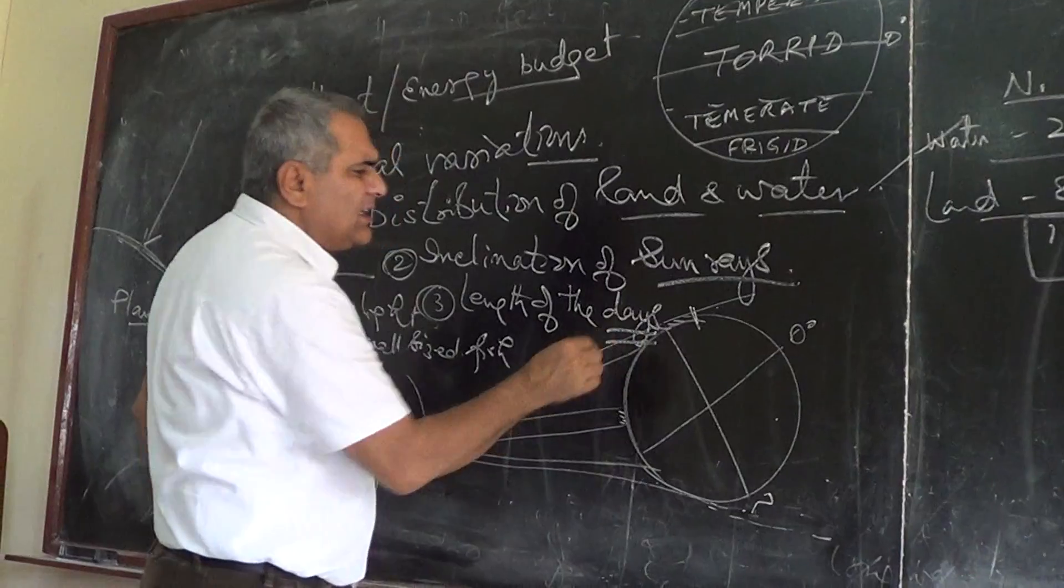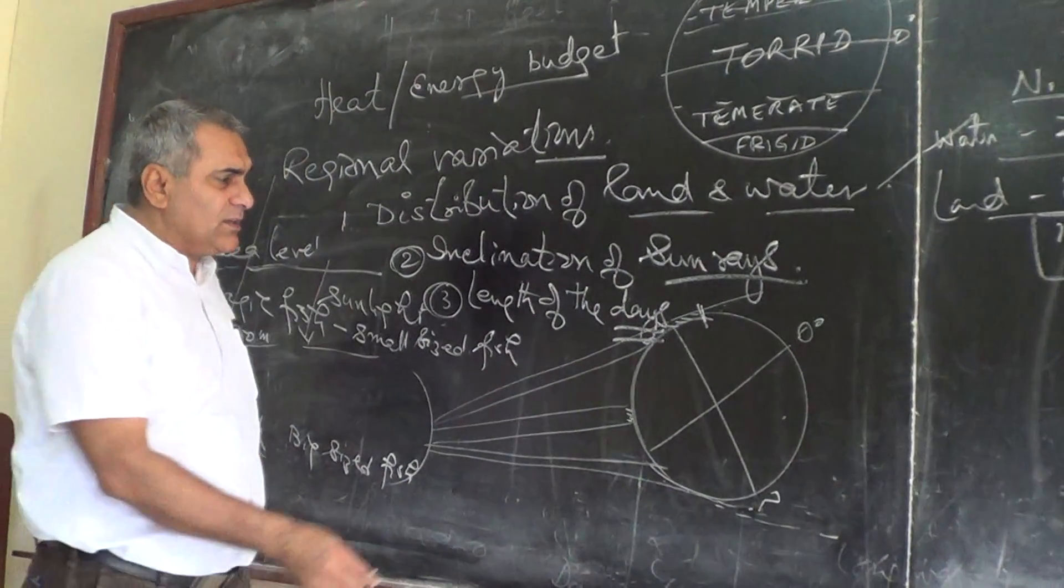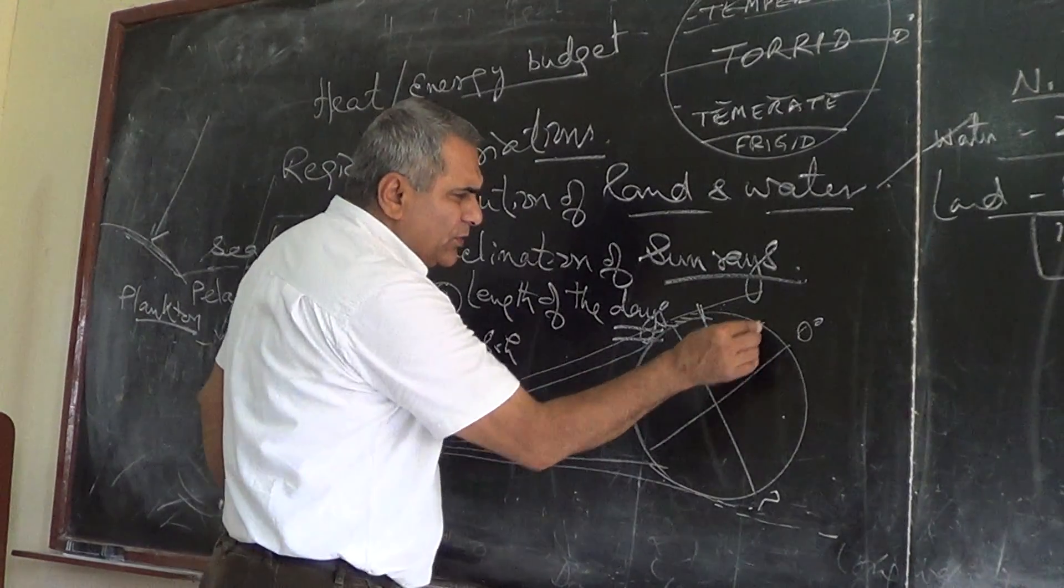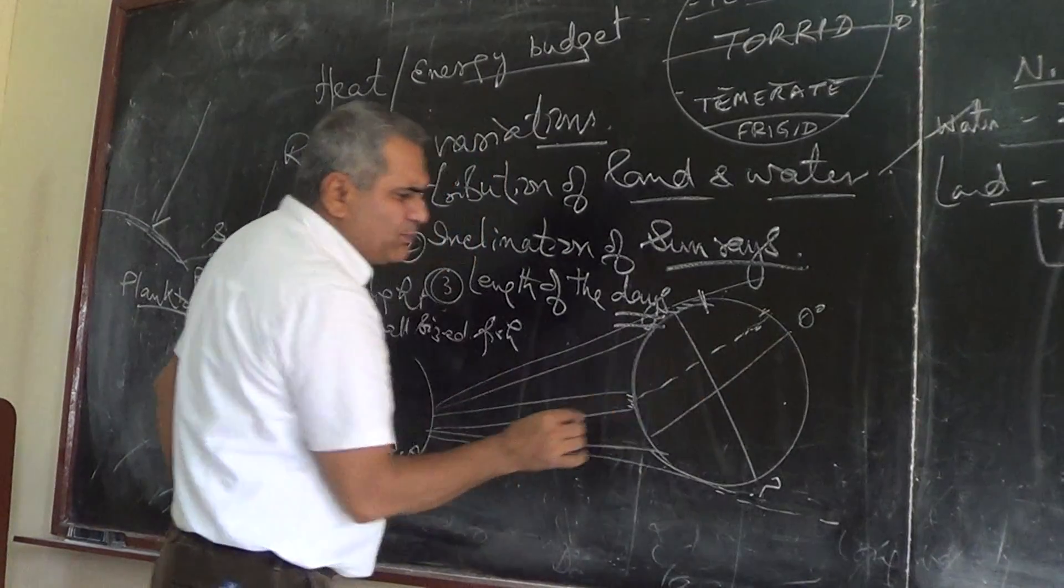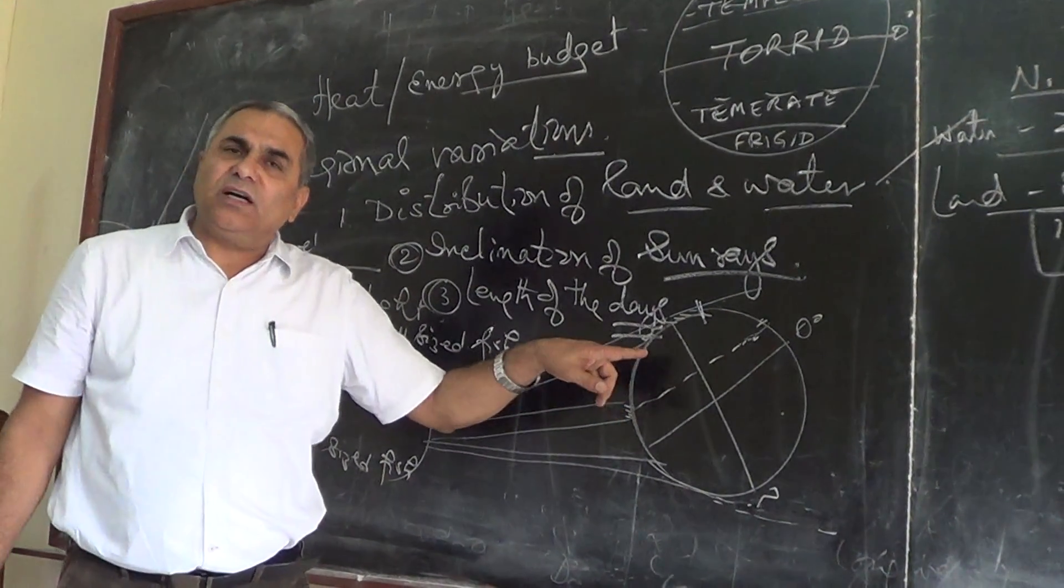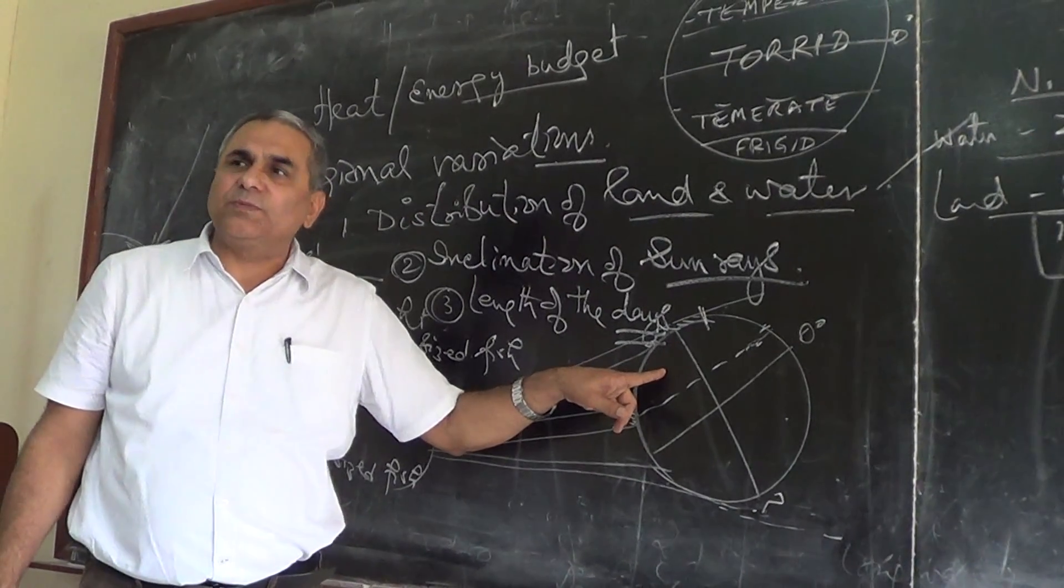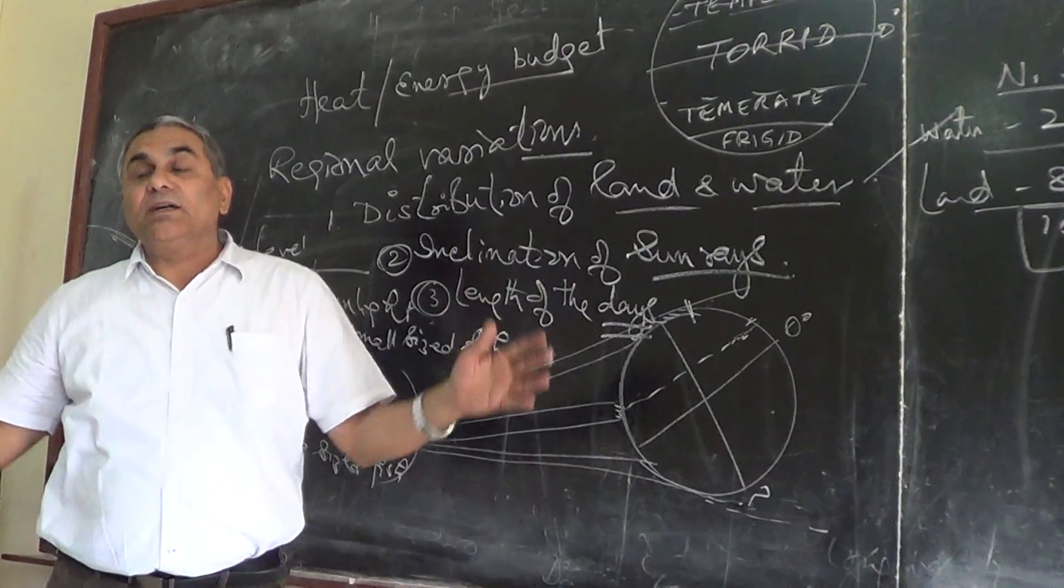Apart from that, the length of the day is also influencing - this is the third factor. When the sun is striking on the tropic of cancer, the sun is basically inclined over here. In this position, length of the day is more in the northern hemisphere.